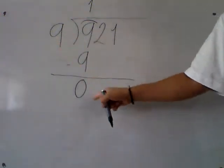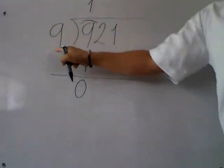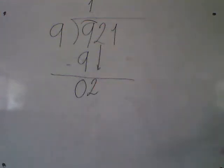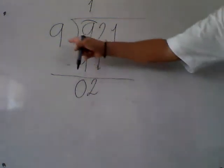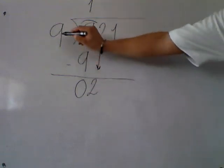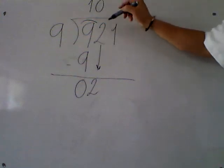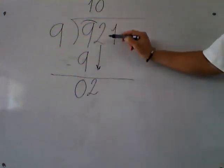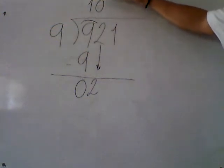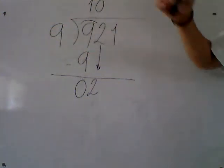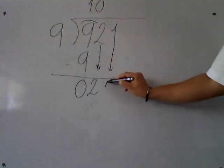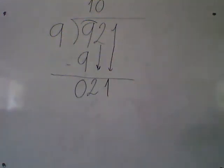Let's continue. Does 9 fit in 0? No, because 9 is more than 0. So I bring down the next number: 2. Does 9 fit in 2? No. What happens when you bring down a number and it still doesn't fit? You add a 0 in the quotient. Every time you bring down a number and it doesn't fit, you add a 0 in the quotient. Now we go to the next number: 1. Bring down 1 and now we have 21.